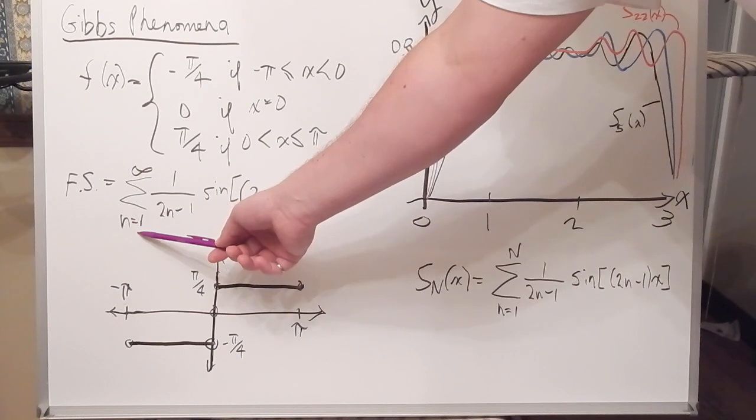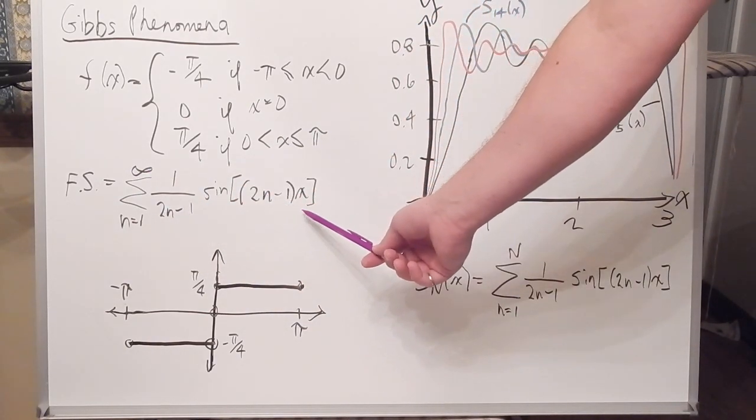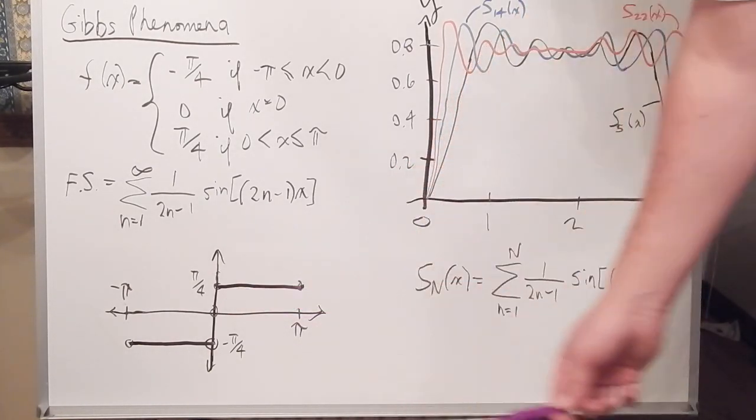So this is our Fourier series here, 1 over 2n minus 1 times the sine of 2n minus 1x, and this is our step function.